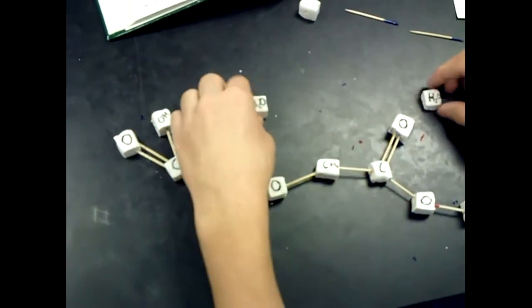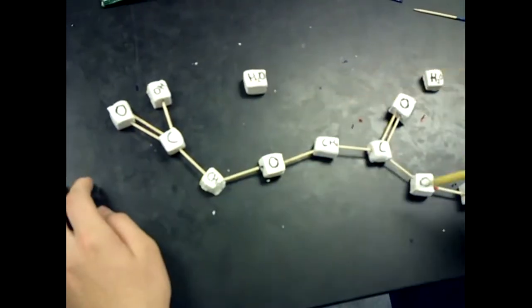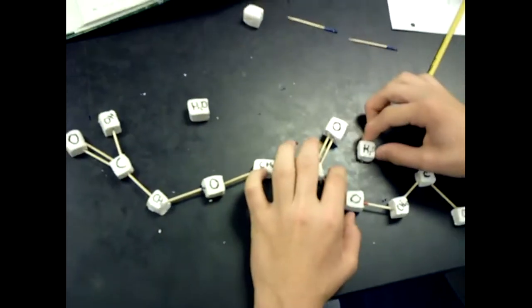So circle each individual model, even though it's combined, this is a polymer. Yeah, this is a polymer, and then these are the monomers connected. Okay, so what's the name of that process?